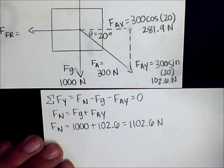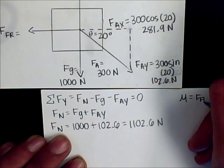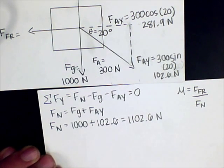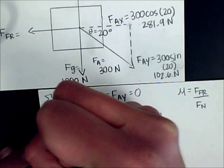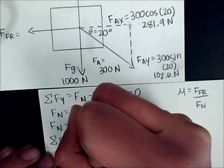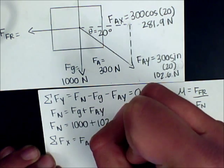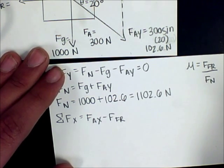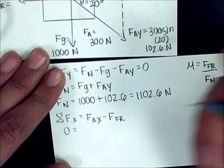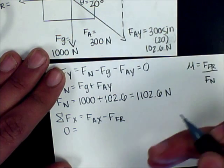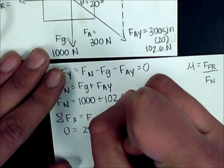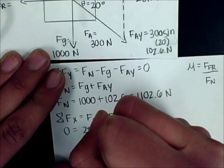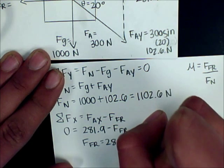Now we have to find the coefficient of kinetic friction. We need the force of friction and the normal force. To calculate the force of friction, we consider all forces in the x direction. The force in x equals the applied force in x minus the force of friction. Since we're moving at constant velocity, acceleration equals zero, so zero equals 281.9 minus the force of friction. Therefore, the force of friction equals 281.9 newtons.